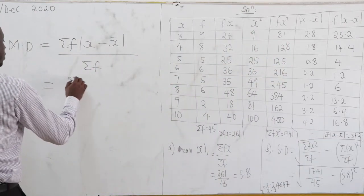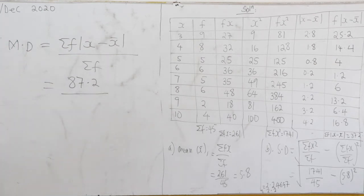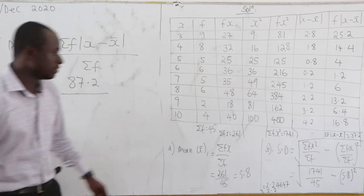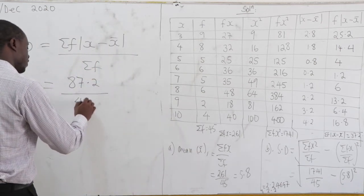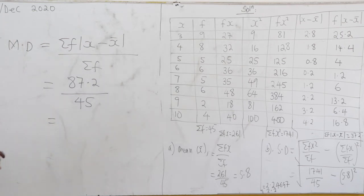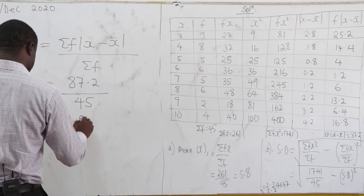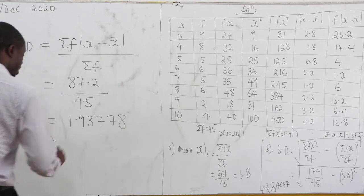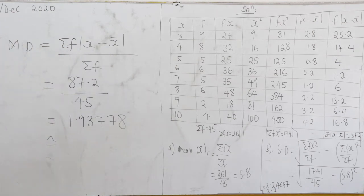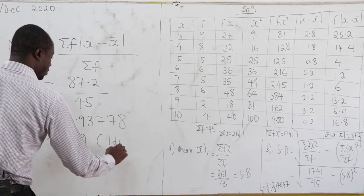Mean deviation = Σf|x − mean| / Σf = 87.2 / 45. Working this out on the calculator gives 1.9378, which correct to one decimal place is 1.9.